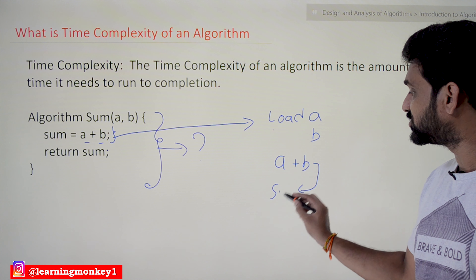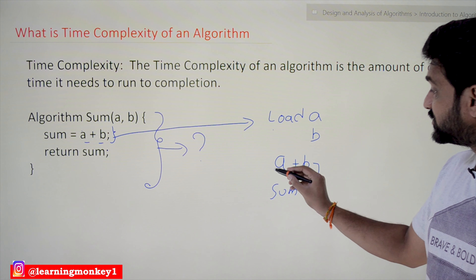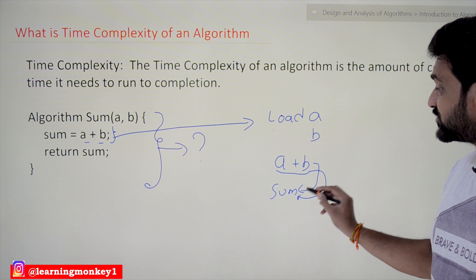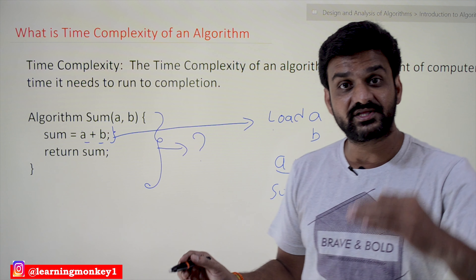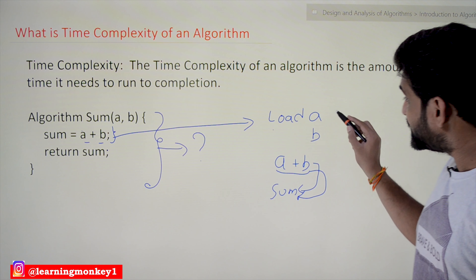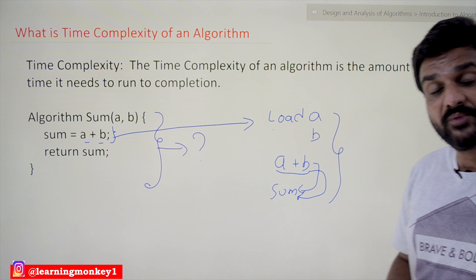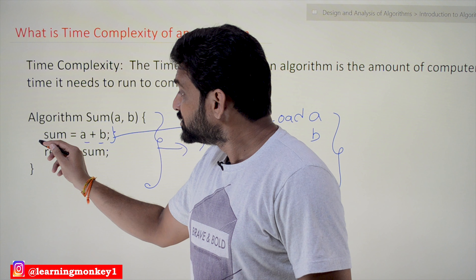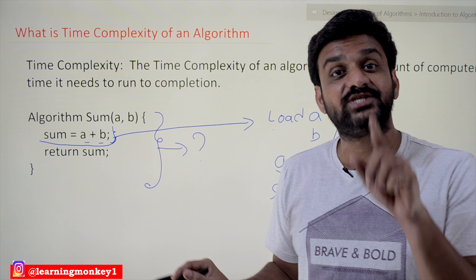The sum of a plus b will get stored in a variable called sum, and we have to store this value of a plus b into the memory location where sum is stored. So these many micro-operations have to be done in order for this one single statement to get executed and produce output.